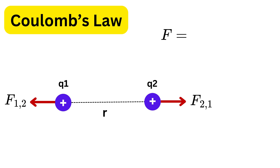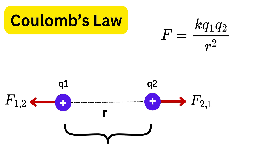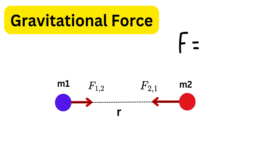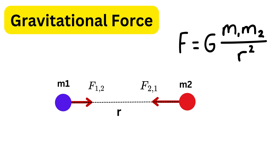The magnitude of this force is F = k × q1 × q2 / r², where r is the distance between the two charges and k is a constant. This is similar to the magnitude of the gravitational force: F = G × m1 × m2 / r², where G is a constant and m1, m2 are the masses of the objects.